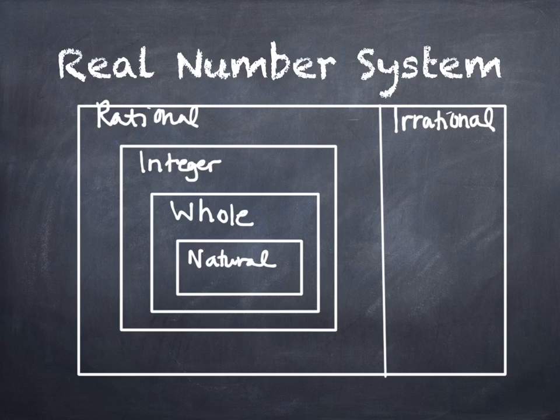Let's start with natural numbers. When you first learned to count, what number do you start with? One. You go 1, 2, 3, 4 — this is what we teach children when they're little. They start to count with the number one. Those are the natural — or sometimes called the counting — numbers. So natural numbers are the numbers 1, 2, 3, dot dot dot. We can't list them all because they go on forever, indefinitely.